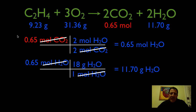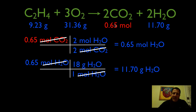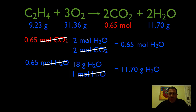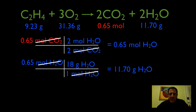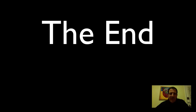So that is the complete problem: 9.23 grams of ethylene reacts with 31.36 grams of oxygen, yielding 0.65 moles of CO2 and 11.7 grams of water. We could also convert the CO2 into grams to check our conservation of mass — the mass of the products has to equal the mass of the reactants. We used step two, converting using the molar ratio, and step three, converting from moles to grams using the molar mass. I hope you found that helpful — give me a thumbs up below, and thanks for watching!